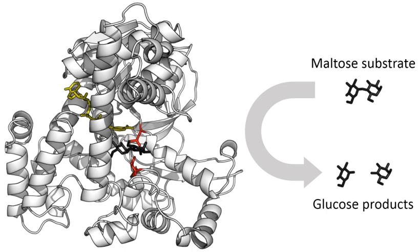An enzyme's name is often derived from its substrate or the chemical reaction it catalyzes, with the word ending in -ase. Examples are lactase, alcohol dehydrogenase, and DNA polymerase. Different enzymes that catalyze the same chemical reaction are called isozymes. The International Union of Biochemistry and Molecular Biology have developed a nomenclature for enzymes, the EC numbers. Each enzyme is described by a sequence of four numbers preceded by EC, which stands for Enzyme Commission.